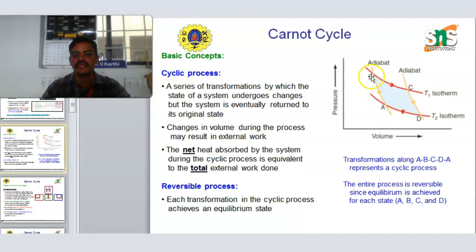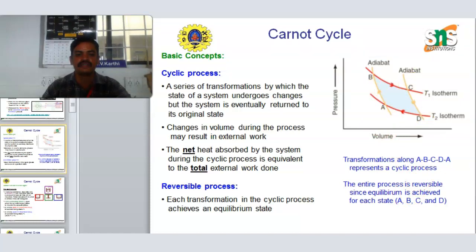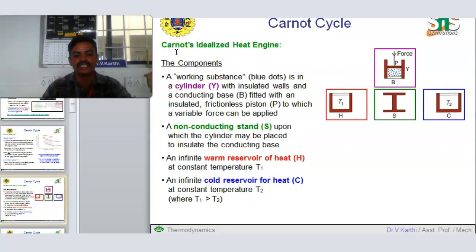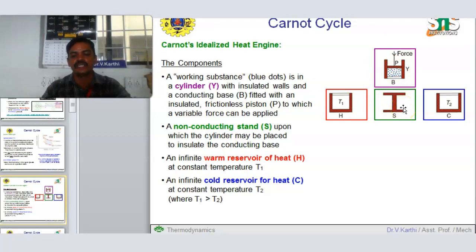The transformations AB, BC, CD, and DA represent the cyclic process. The entire process is reversible since equilibrium is achieved for each state A, B, C, and D. The components of a Carnot idealized heat engine include: a working substance (blue dot), a cylinder with insulated walls and a conducting base, fitted with an insulated frictionless piston to which a variable force can be applied, a non-conducting stand upon which the cylinder may be placed to insulate the conducting base, and an infinite warm reservoir of heat at constant temperature T1.